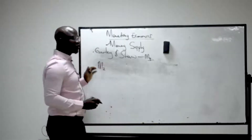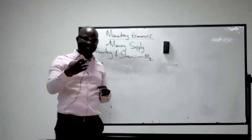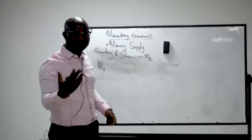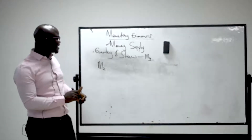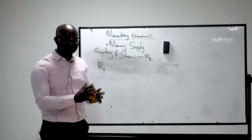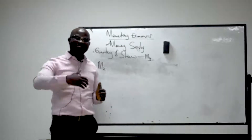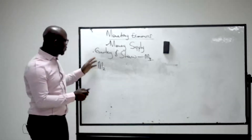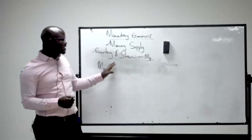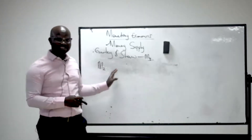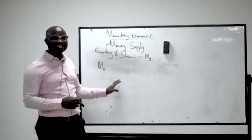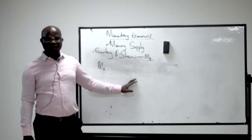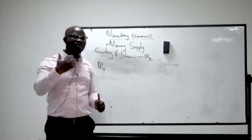M2 is the combination of the currency in the hands of the public plus the demand deposit and the time deposit. Under M3, we add the savings of non-financial institutions. The time deposit remains the fixed deposit of the customer with the commercial bank.